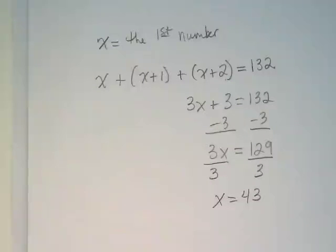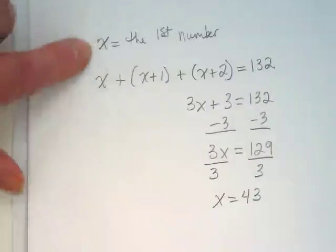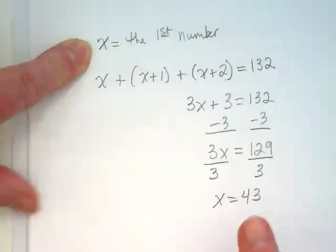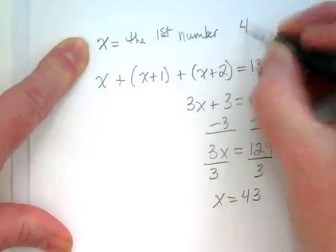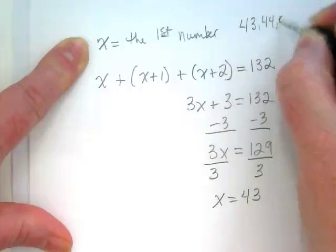What did we say our first number was equal to? X. What are we saying X is equal to? 43. So the numbers should be 43, 44, and 45.